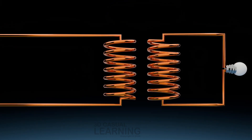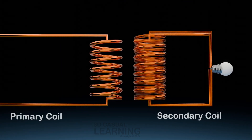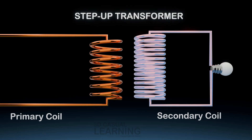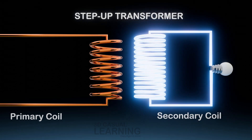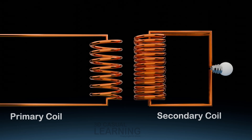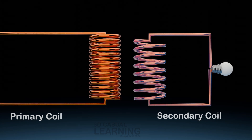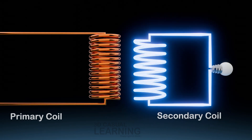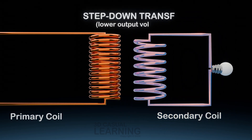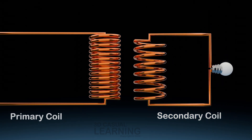The ratio of turns in the primary and secondary windings determines the voltage transformation ratio of the transformer. If there are more turns in the secondary winding compared to the primary winding, it has a higher output voltage than the input voltage and is called a step-up transformer. If there are fewer turns in the secondary winding, it has a lower output voltage than the input voltage, and is called a step-down transformer.